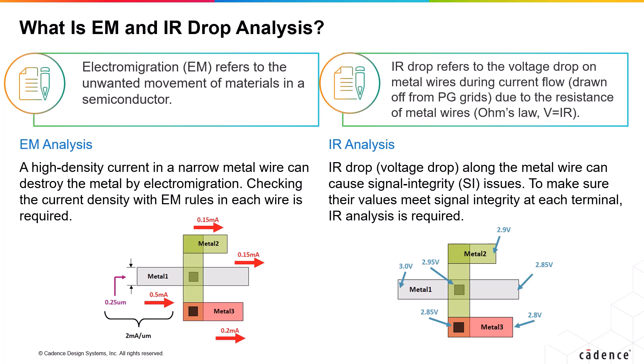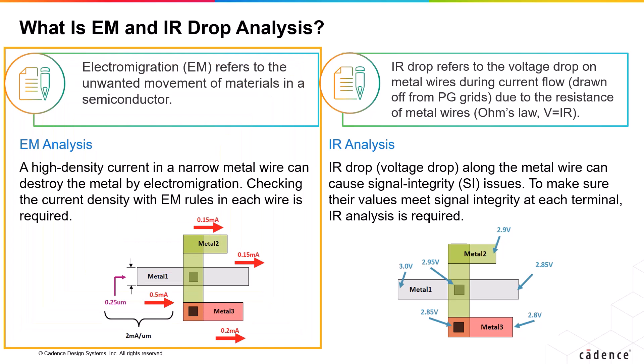What is EM and IR analysis? Starting with the EM analysis, it stands for electromigration, and that refers to the unwanted movement of materials in a semiconductor. If the current density is high enough, there can be momentum transfer from moving electrons to the metal ions that make up the lattice of the interconnect material. The ions will drift in the direction of the electron flow, resulting in a gradual displacement of metal atoms, potentially causing open and short circuits.